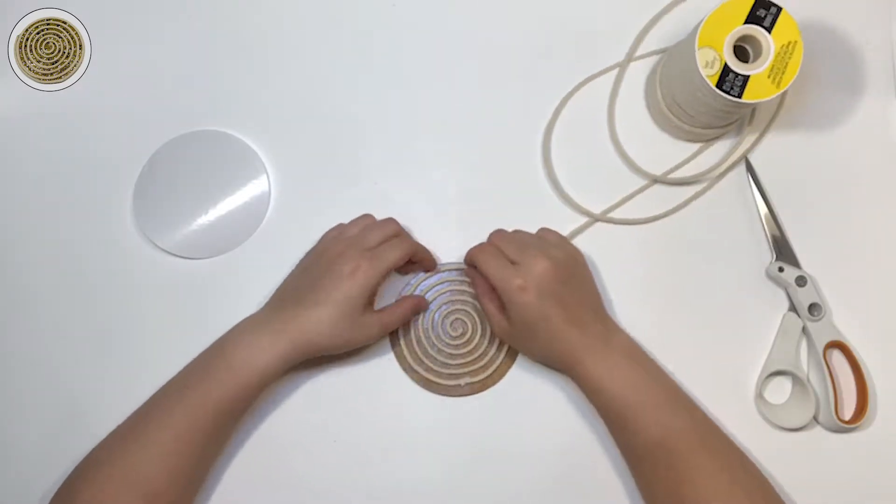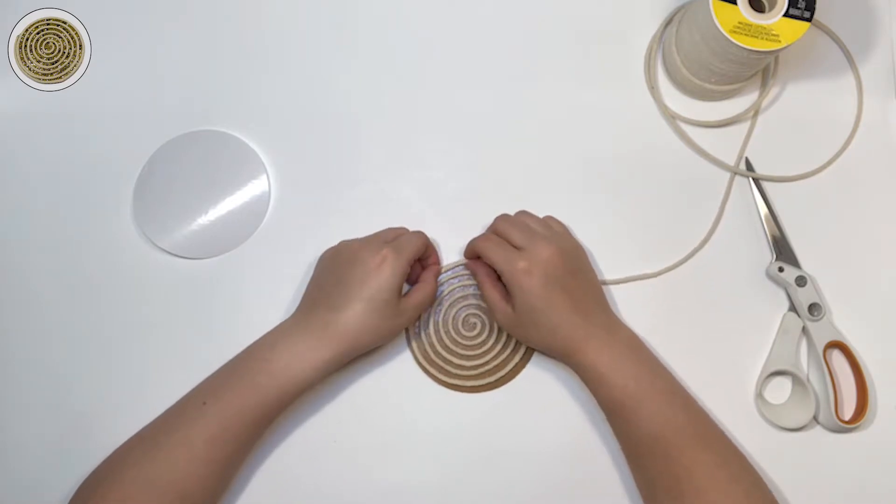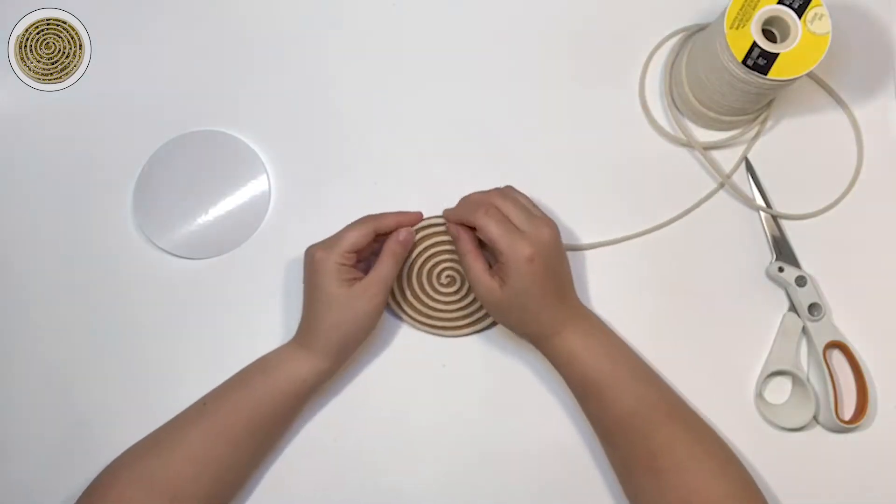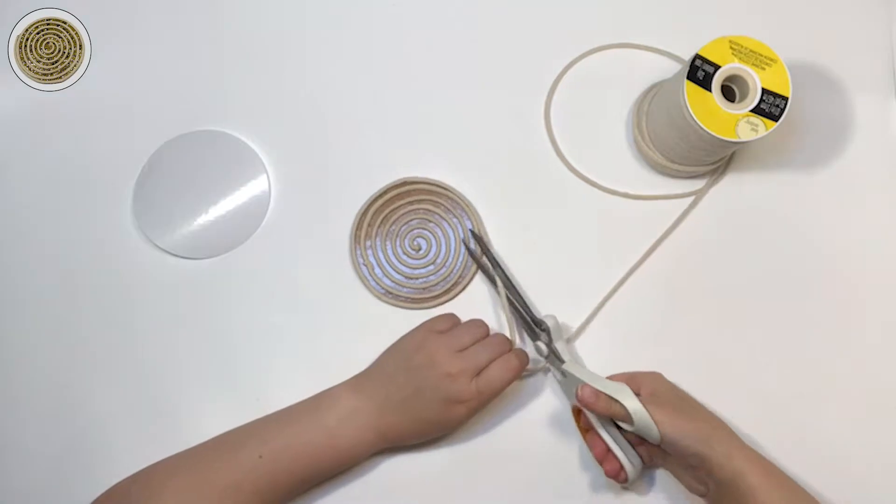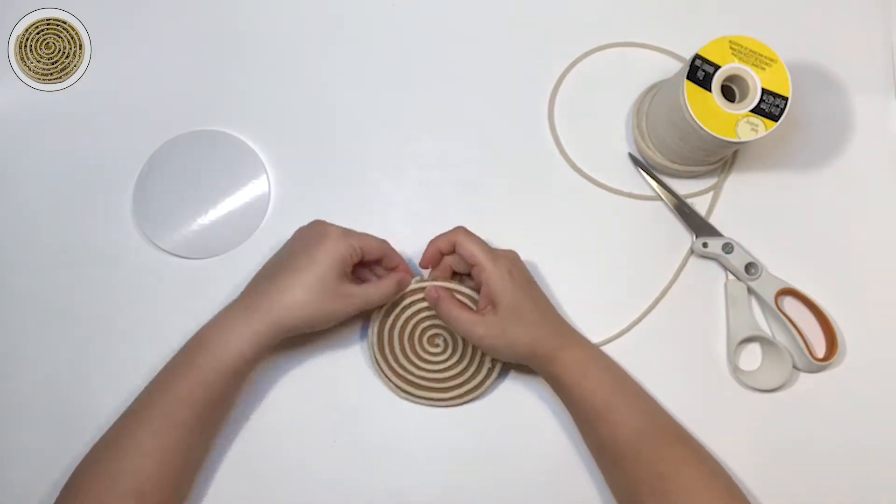When you get to the end of your swirl, make sure you wrap all around the edges. Trim the cord on an angle with the scissors between the coaster and the cord so that the rough edge can be pressed into the adhesive.